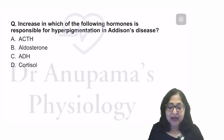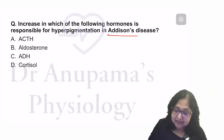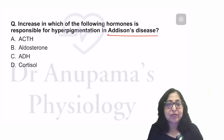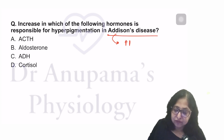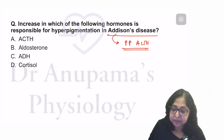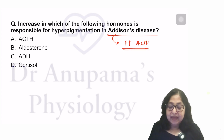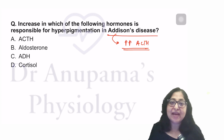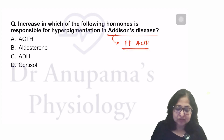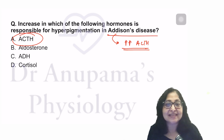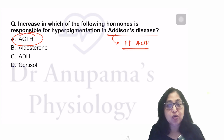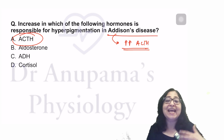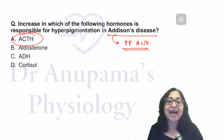Which hormone is responsible for hyperpigmentation in Addison's disease? In Addison's disease, there is decreased secretion of mineralocorticoids and glucocorticoids, which causes increased ACTH. ACTH itself has MSH — melanocyte stimulating hormone — activity, and that is what is responsible for hyperpigmentation in Addison's disease. The answer is ACTH. Please remember: whenever ACTH levels are normal there is no hyperpigmentation; it is only when ACTH becomes in excess that its MSH activity becomes manifest and you get hyperpigmentation.